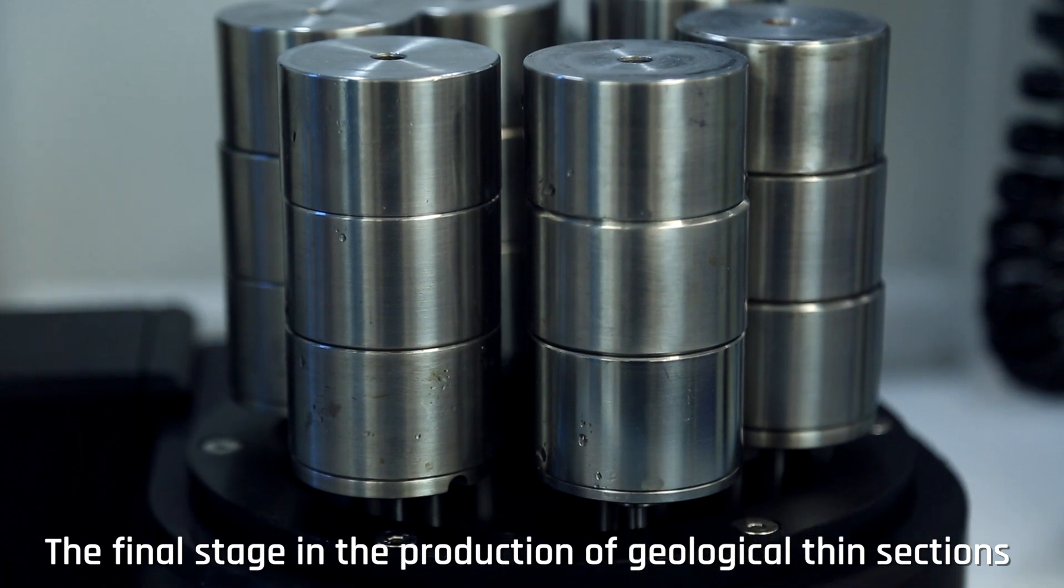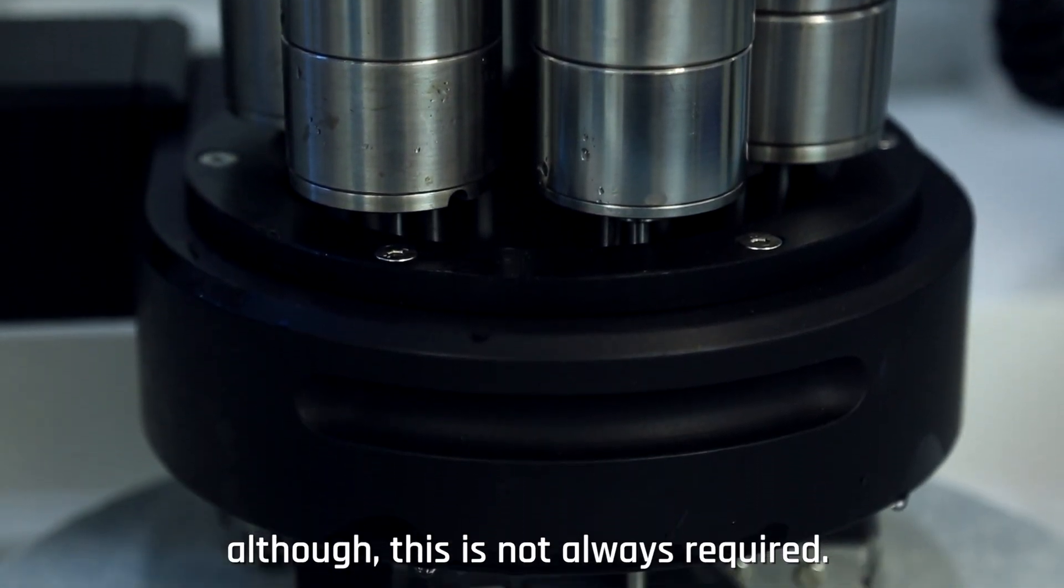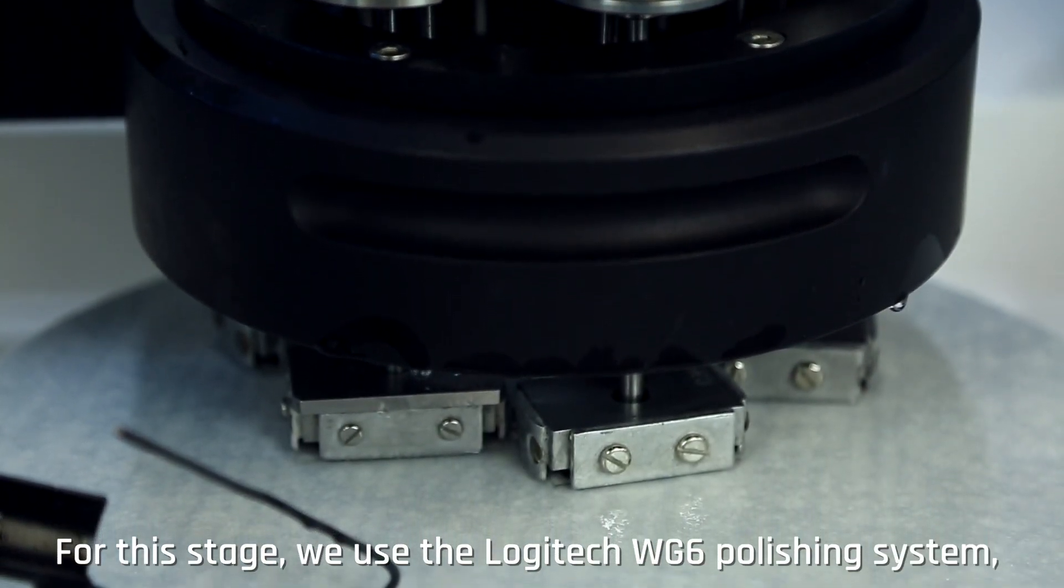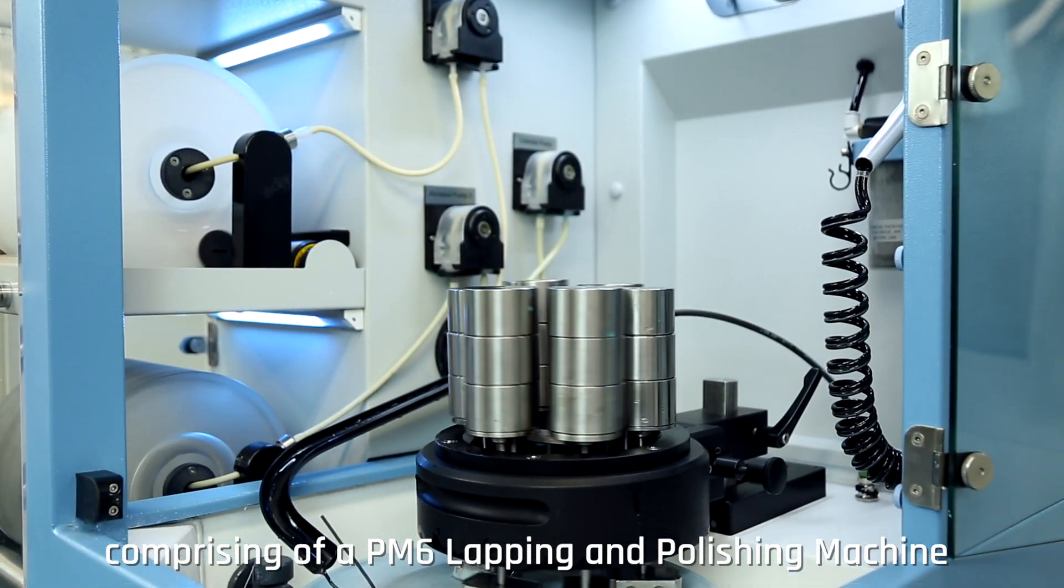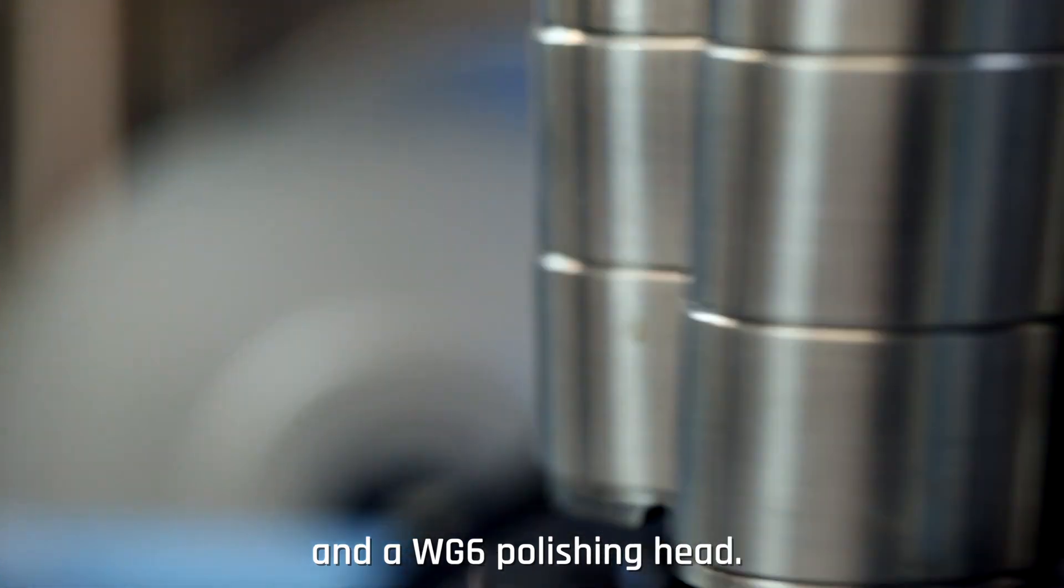The final stage in the production of geological thin sections is to polish the specimens, although this is not always required. For this stage we use the Logitech WG6 polishing system, comprising of a PM6 lapping and polishing machine and a WG6 polishing head.